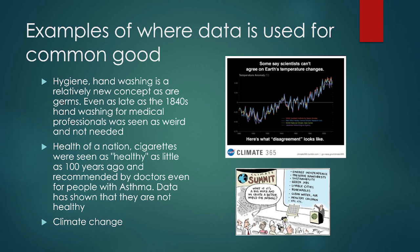Another example of data used for the common good is climate change — what's going on with global warming and how that is changing everything from weather systems to the behavior of animals. So those are some examples of where data, data collection, sharing data, interacting with data, and data analysis are all coming together and hopefully making a difference for the common good. I hope that this made sense and was interesting, and I hope you are all having a lovely day.